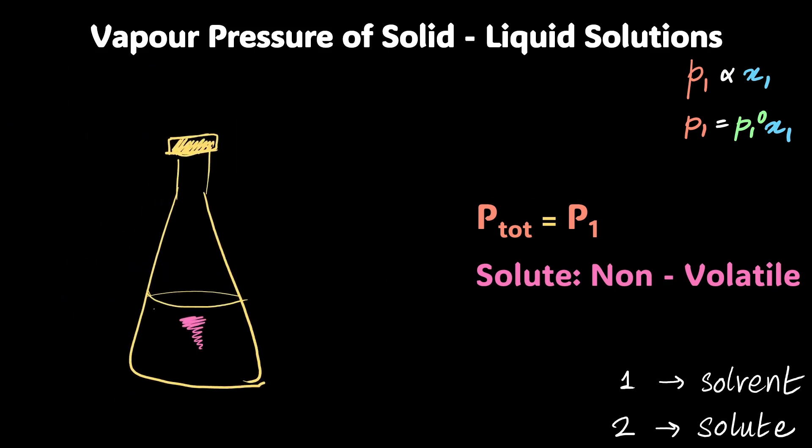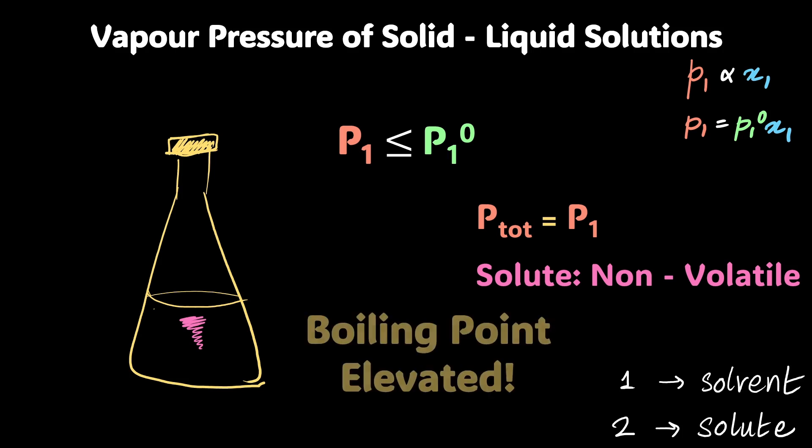So I think we already know what's going to happen because P₁ is always going to be either lower than or equal to P₁⁰, which means that I'm always going to have to heat the liquid, or in this case, the whole solution, more than I did before to get to the atmospheric pressure, which means that the boiling point is always going to be elevated. This is a beautiful conclusion right over here.